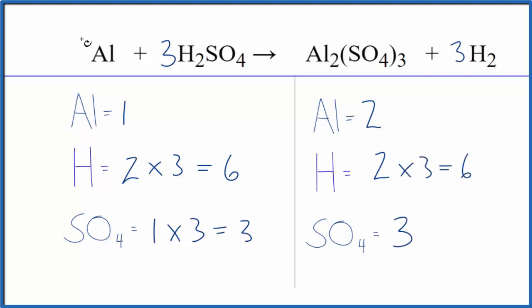And then the aluminum, we just put a two here. One times two, it gives us two. The aluminum atoms are balanced.